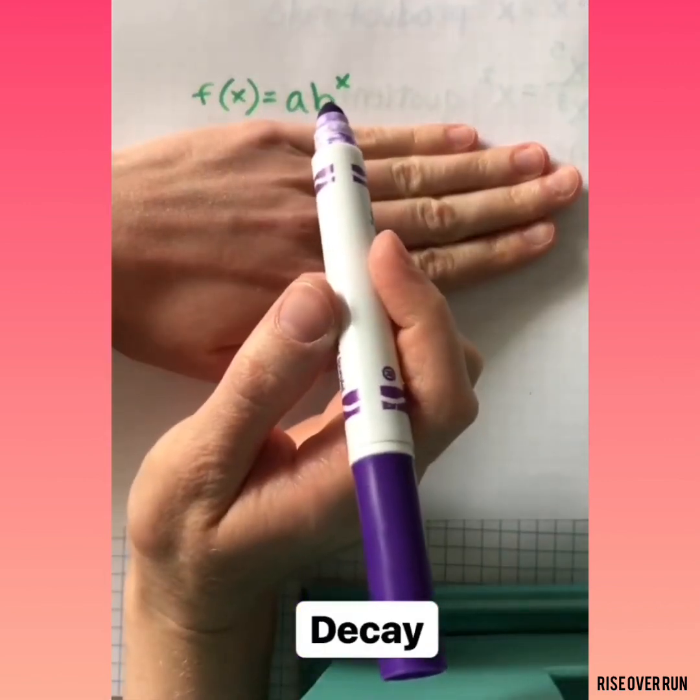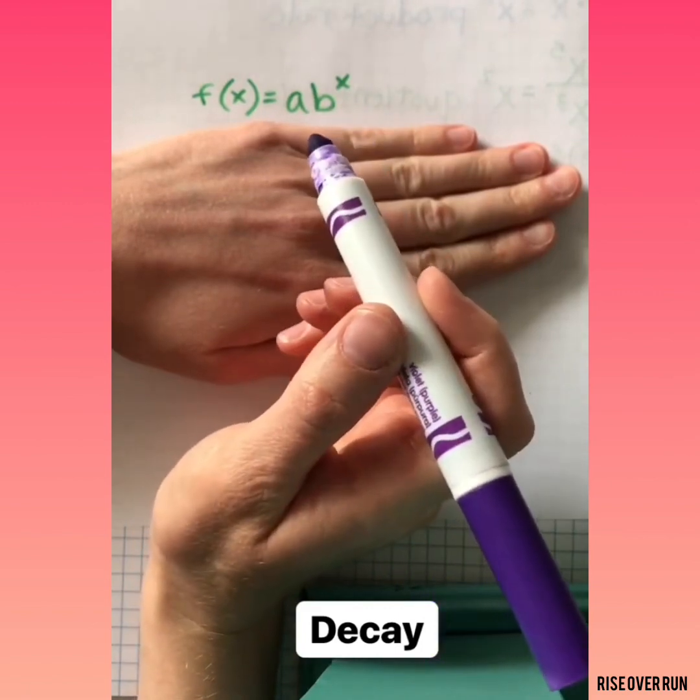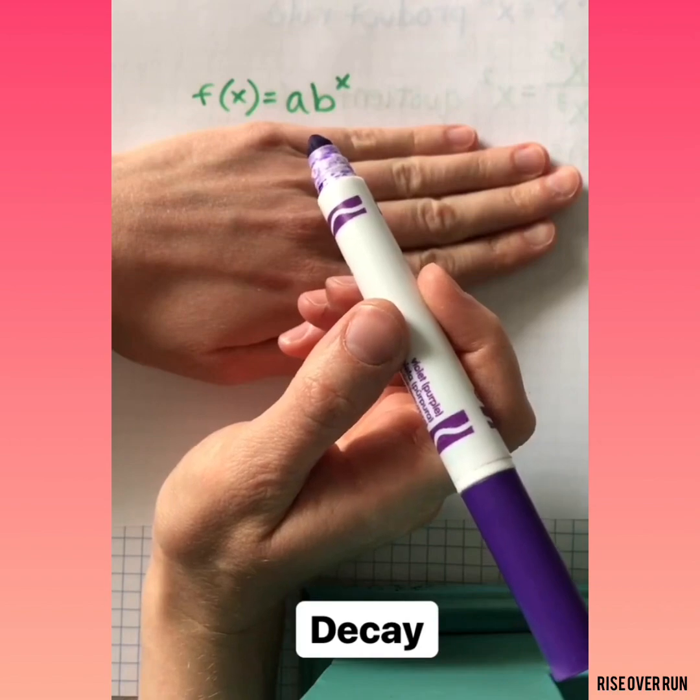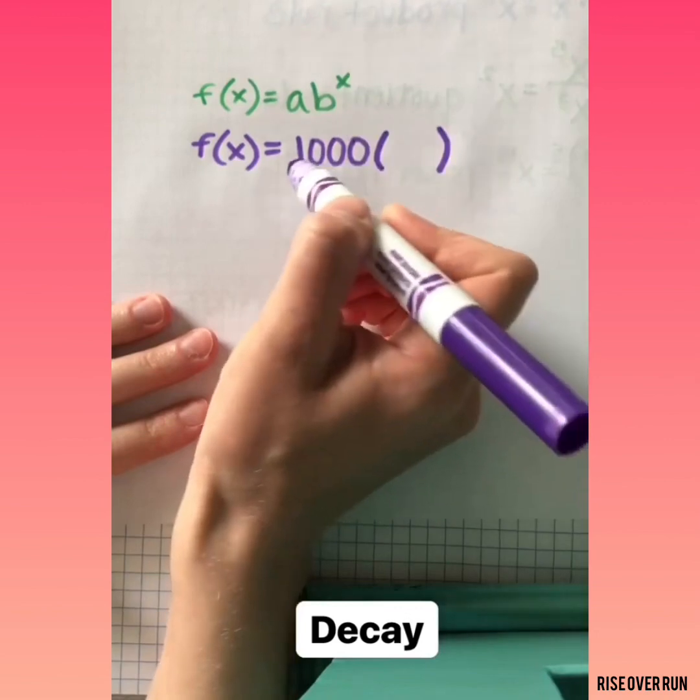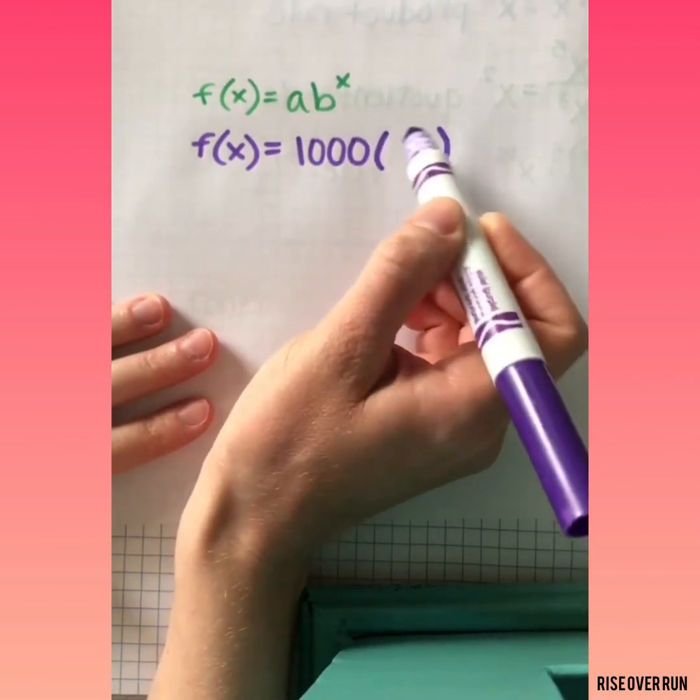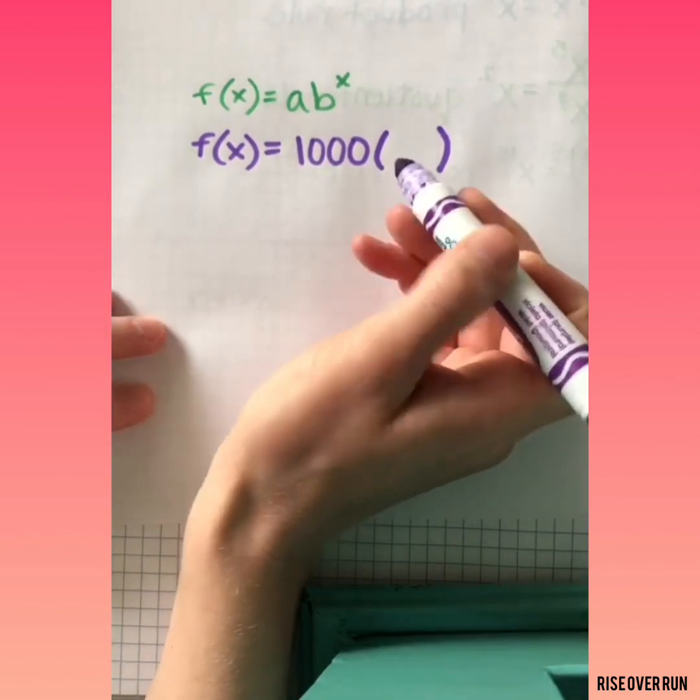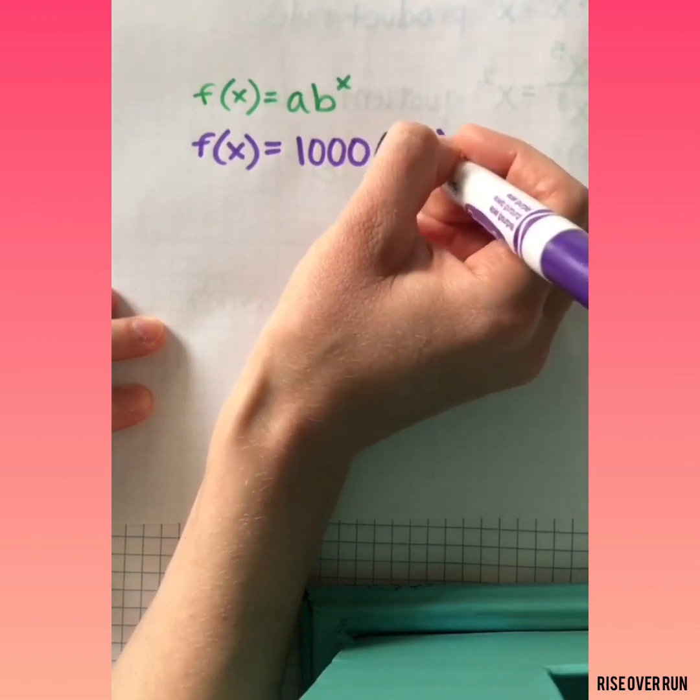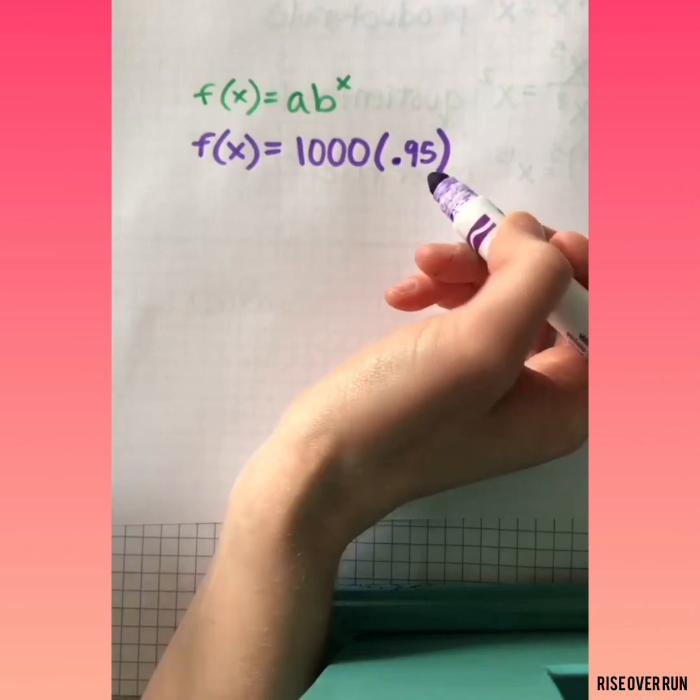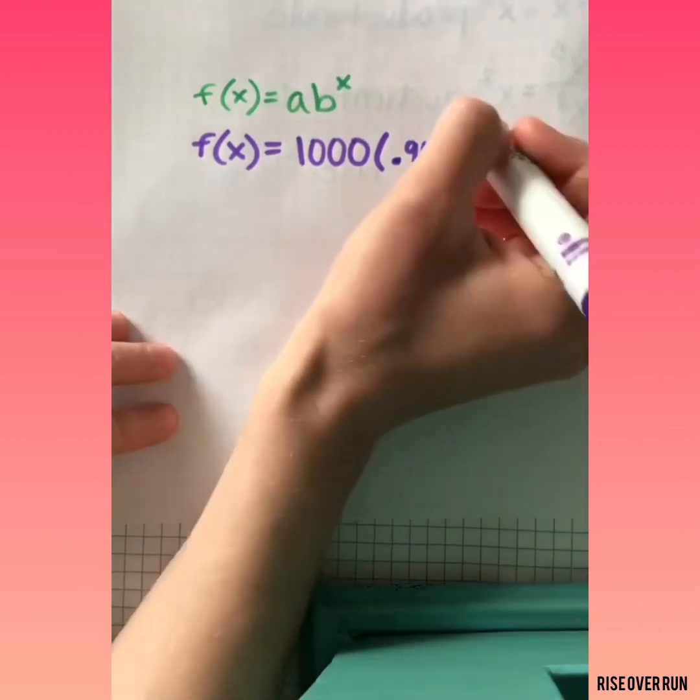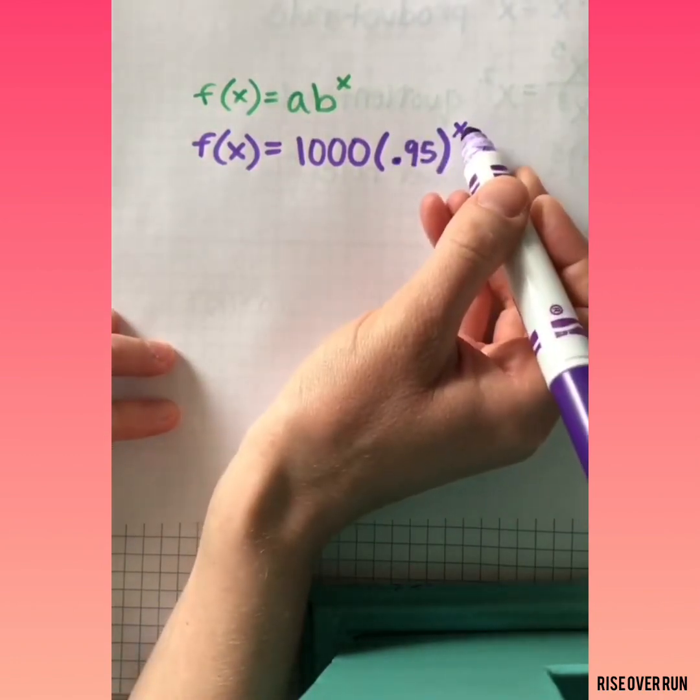Now let's look at how we can show exponential decay or when an amount is decreasing. Let's say we have a deer population that starts out at 1,000, and it's decreasing by 5% every year. Here's our initial value of 1,000. Now we need to put a number here that would multiply to show a decrease of 5%. That would be 0.95. It's 5% taken away from the whole, so it's 95%. And it's raised to an exponent because that will give us 5% decrease each year.